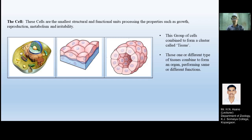The next one shows the combination of all tissues. Different types of tissue combine together to form an organ, performing the same or different functions.